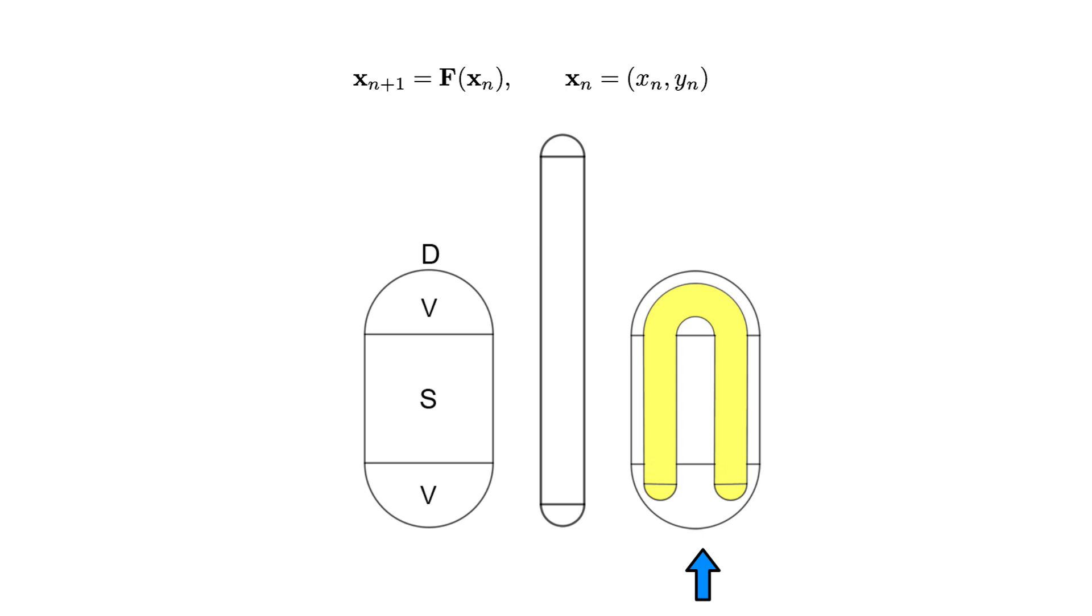This is one iteration of the map, so every point, say xn, in the original D region has been mapped to a point in yellow. Notice that there are regions, here shown in white, where there is no pre-image.